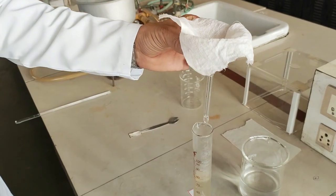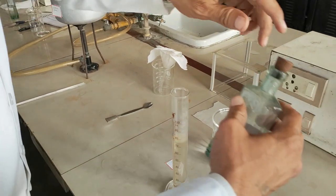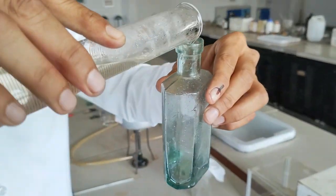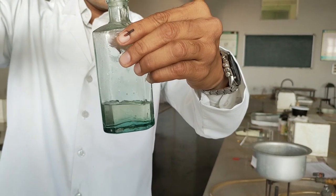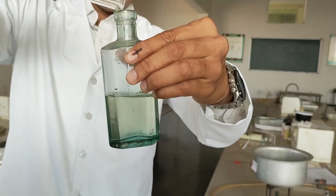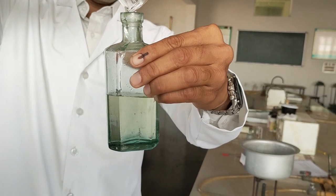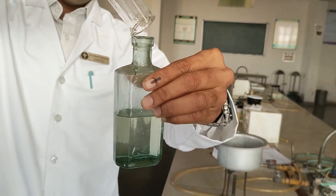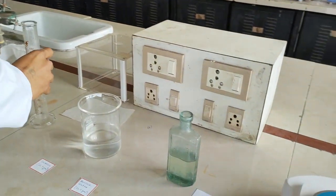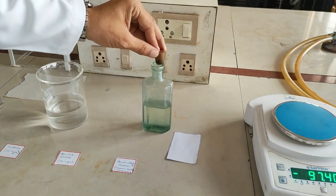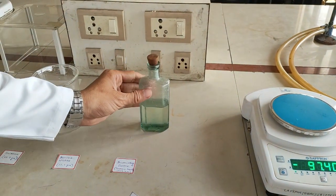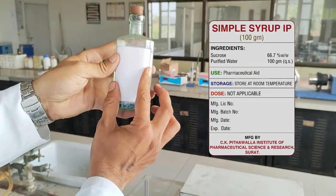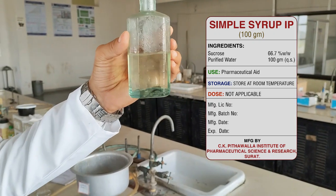Now we are going to remove this and fill it into our final container. We are going to put a cloth over it to close it, and now we are going to paste a label with appropriate information as per the standards. This is our final formulation: simple syrup IP.